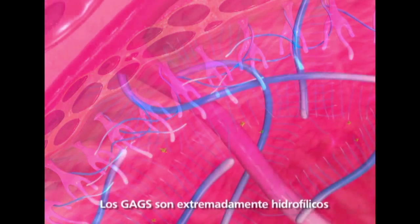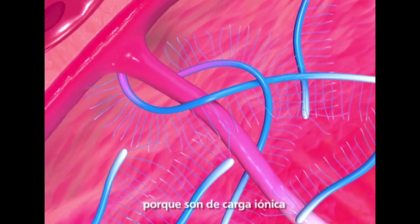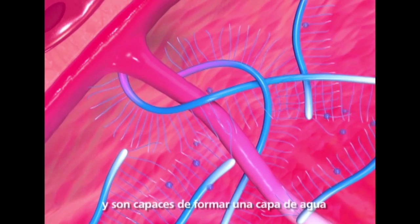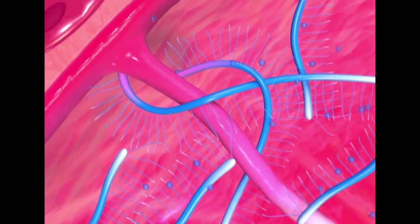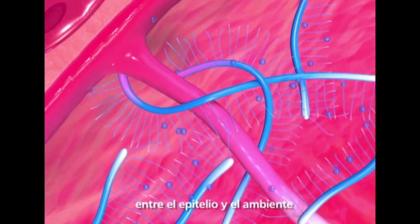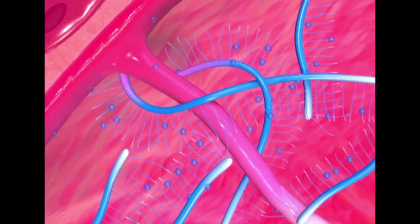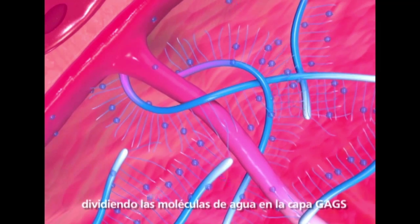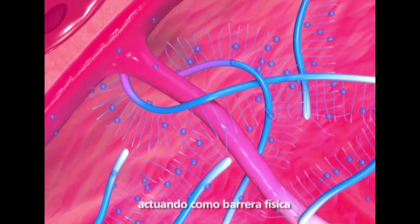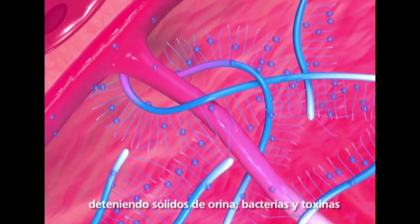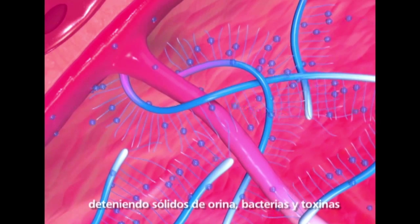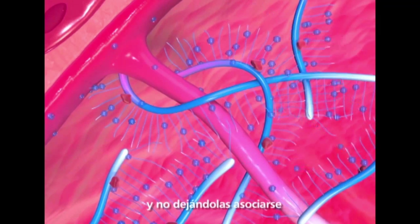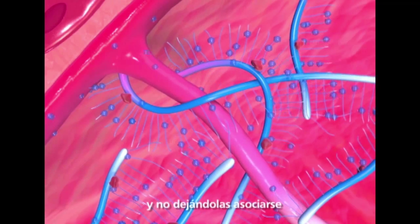GAGs are extremely hydrophilic because of their ionic charge and are therefore capable of forming a layer of water between the endothelial surface and its environment. The binding of water molecules to the GAG layer, in effect, acts as a physical barrier, such that urinary solutes, bacteria and toxins are not able to reach the underlying cell membrane and adhere.